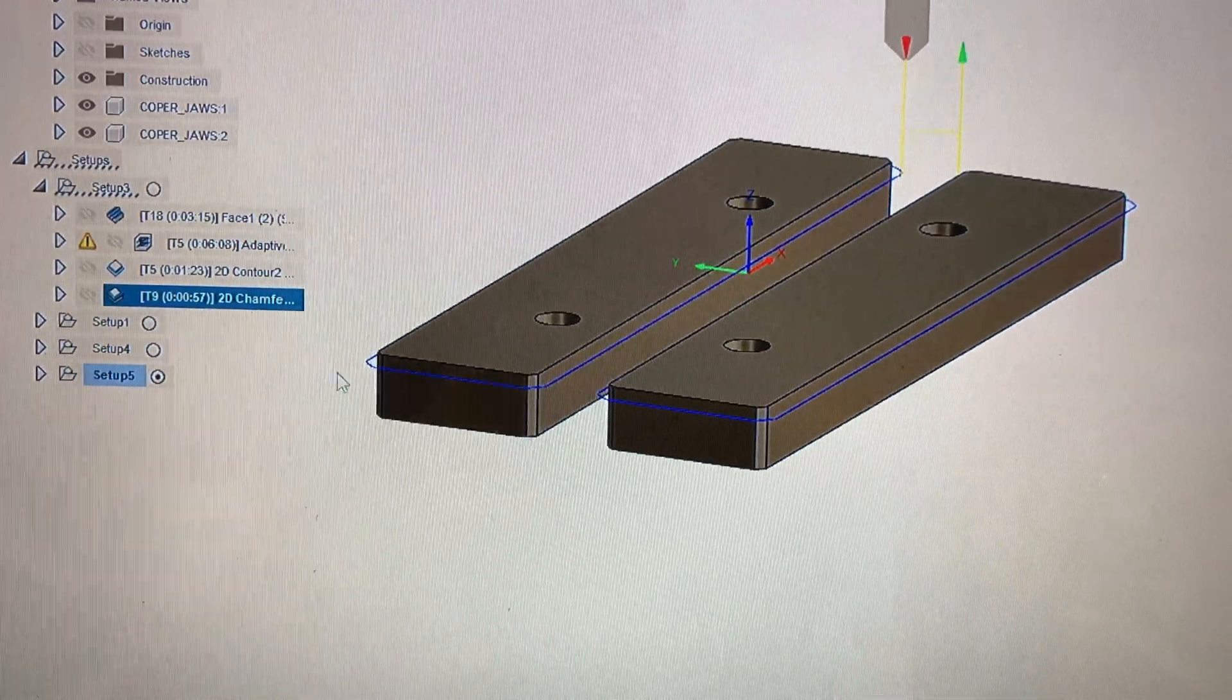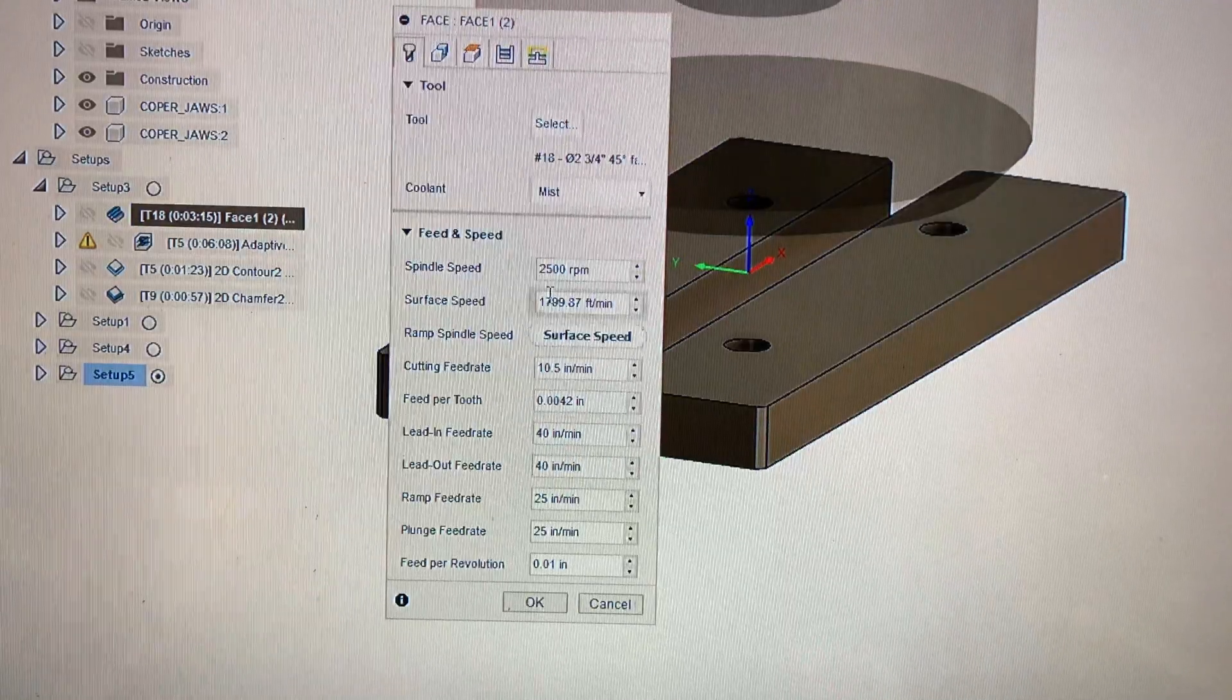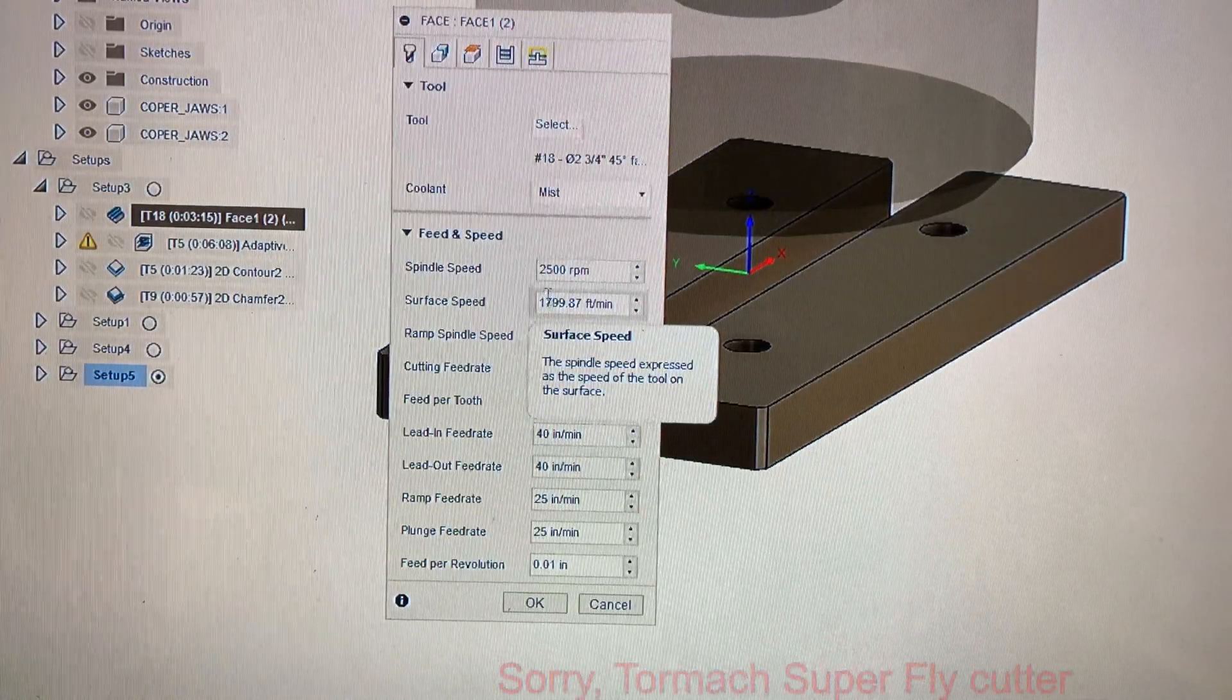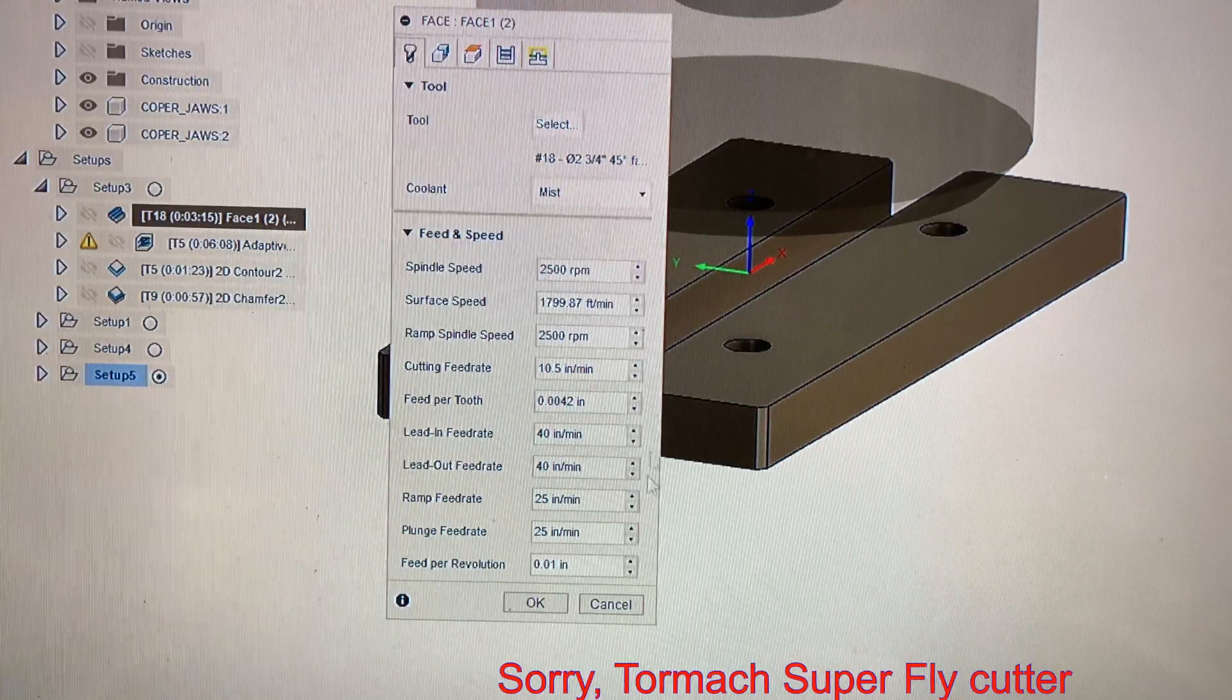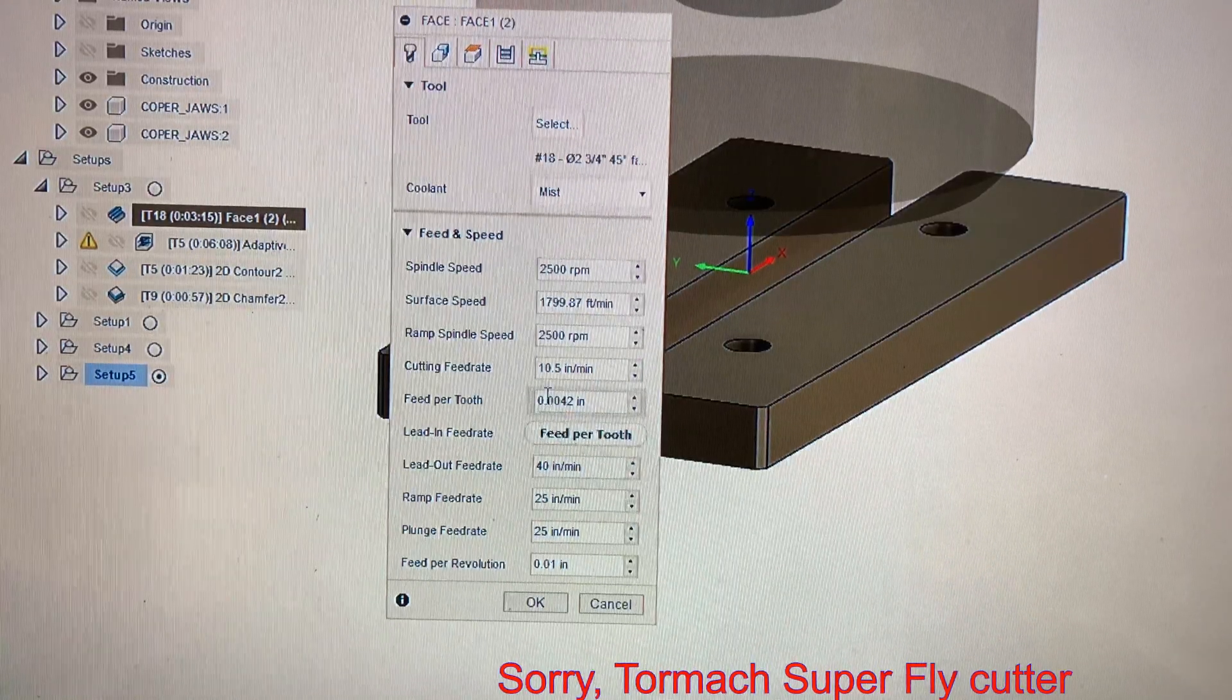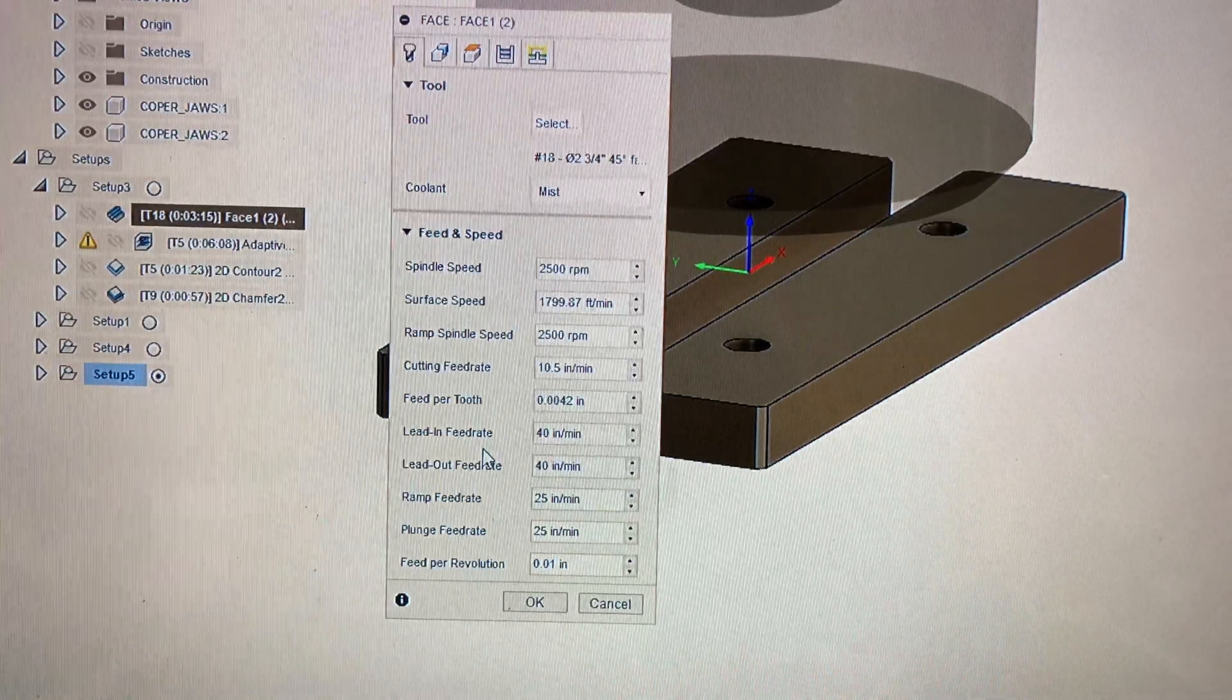And then a chamfer to make it look like a really cool machined part. My feeds and speeds for using the Lakeshore Carbide cutter with the aluminum insert: 2500 RPM at 10.5 inches per minute, my depth of cut was 5 thou.